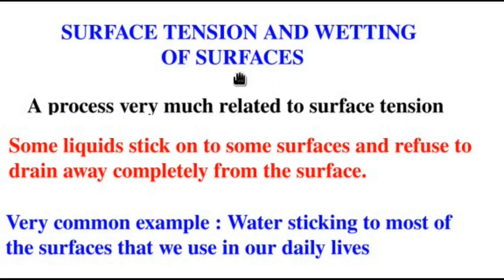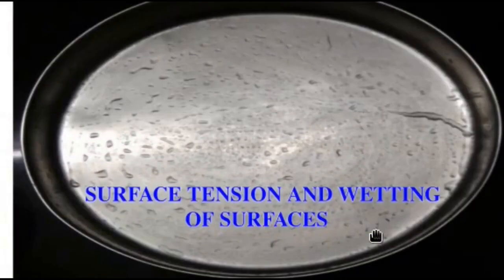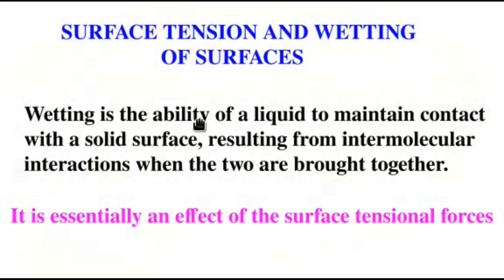Now, it is a common observation that water mainly wets most of the surfaces that we commonly handle in our day to day life. Now, this wetting is a process very much related to surface tension. What is it? Some liquids stick on to some surfaces and they refuse to drain away completely from the surface. A very common example is water sticking to most of the surfaces that we use in our daily lives. This is a plate on which water has been taken and I tried to drain the water completely but look at this. There are still drops of water, bigger drops of water sticking onto the surface of the plate.